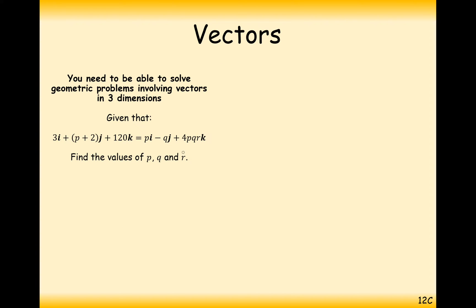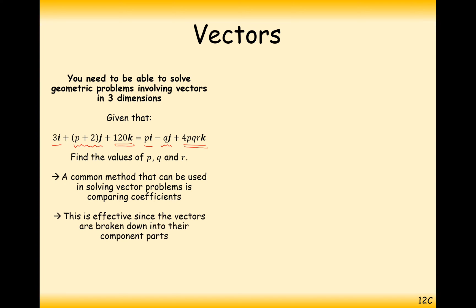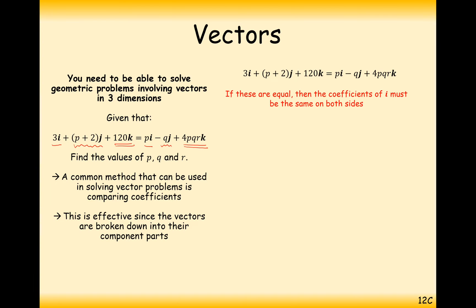Let's look at equating both sides of an equation using vectors to find the values of P, Q, and R. We're effectively going to make three equations ensuring the i components balance on the left and right, the j components balance, and the k components balance — giving us three simultaneous equations. Looking at the i components first: 3i must equal pi, so therefore P must equal 3.